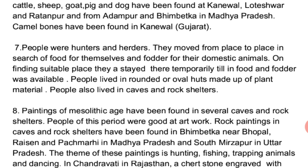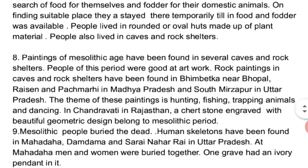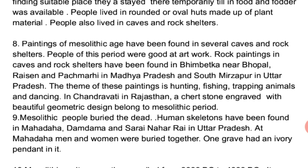On finding a suitable place, men lived there for a certain period and made rounded or oval huts with plant material. People also lived in caves and rock shelters. Mesolithic man was skilled in painting art — paintings have been found in Bhimbetka near Bhopal, Raisen, Pachmarhi in Madhya Pradesh, and south Mirzapur in Uttar Pradesh. These paintings show hunting, fishing, and trapping of animals and dancing. Additionally, an image engraved on a quartzite stone with beautiful geometric design was found at Chandravati in Rajasthan, belonging to the Mesolithic period.